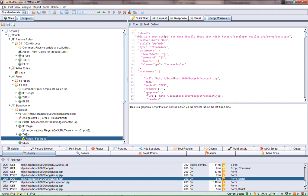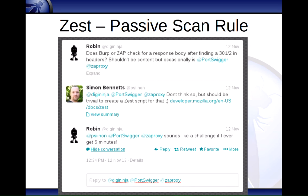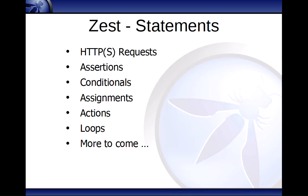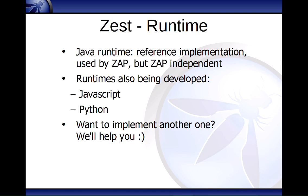Quick question — how many people here think they could create a Zest script with a bit of playing around? Most of you? And nobody thinks they couldn't do it. To summarize: we've demonstrated Plug and Hack phase one and Zest. Zest has loads of different statements — requests, assertions, conditionals, loops. You can loop around fuzzing files and attack things, or attack a wizard with loads of forms all containing CSRF tokens and fuzz one field at the end. Zest needs a runtime defined in JSON — we have a Java runtime, which is the reference implementation ZAP uses, but it's completely independent of ZAP. We're looking to develop JavaScript and Python runtimes as well — if you want to help, please get in touch.